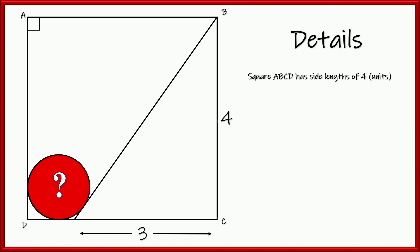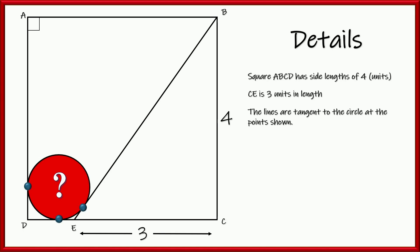We've got a square ABCD. Its side lengths are four units. From C to E is a length of three. Those points you see on the circle are where the line is tangent to the circle. Our job is to find the area of that red circle.